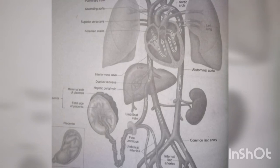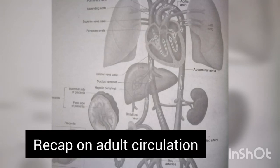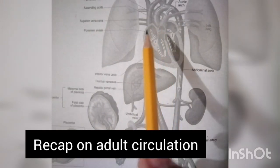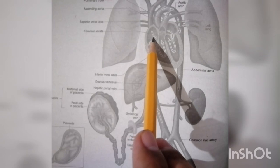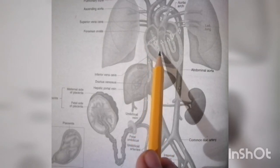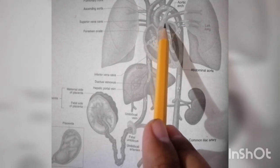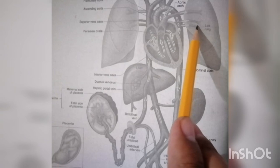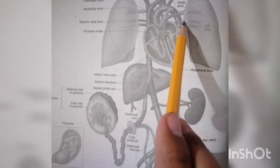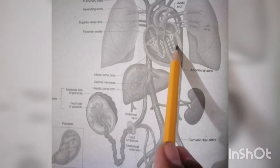In the circulation of the adult heart, deoxygenated blood flows through the superior vena cava and the inferior vena cava into the right atrium, to the right ventricle. The right ventricle pumps blood into the pulmonary arteries, then to the lungs where gas exchange occurs.